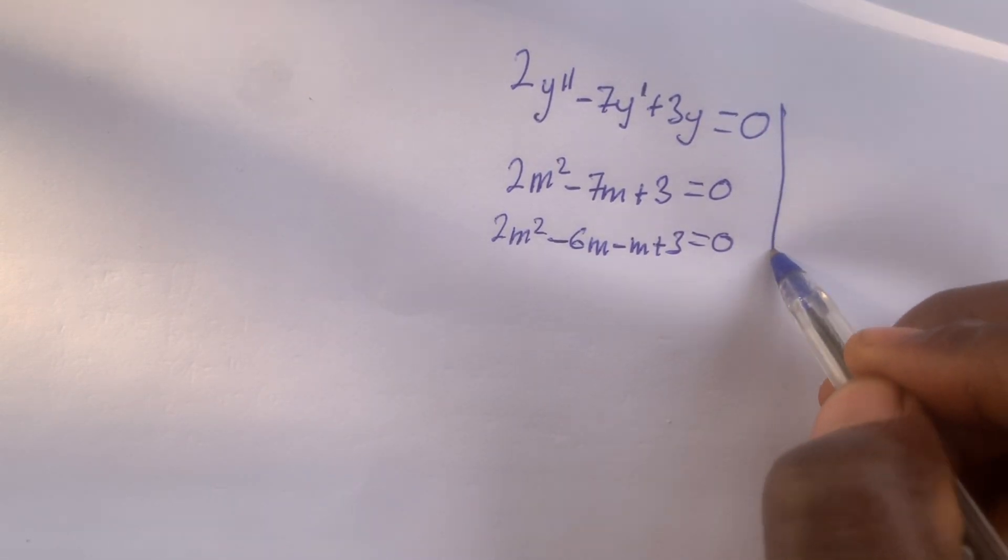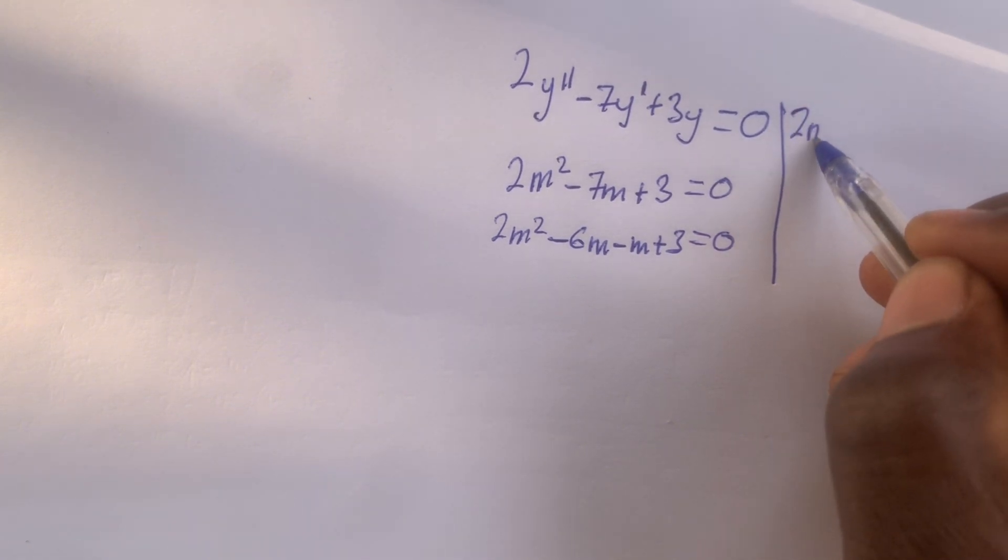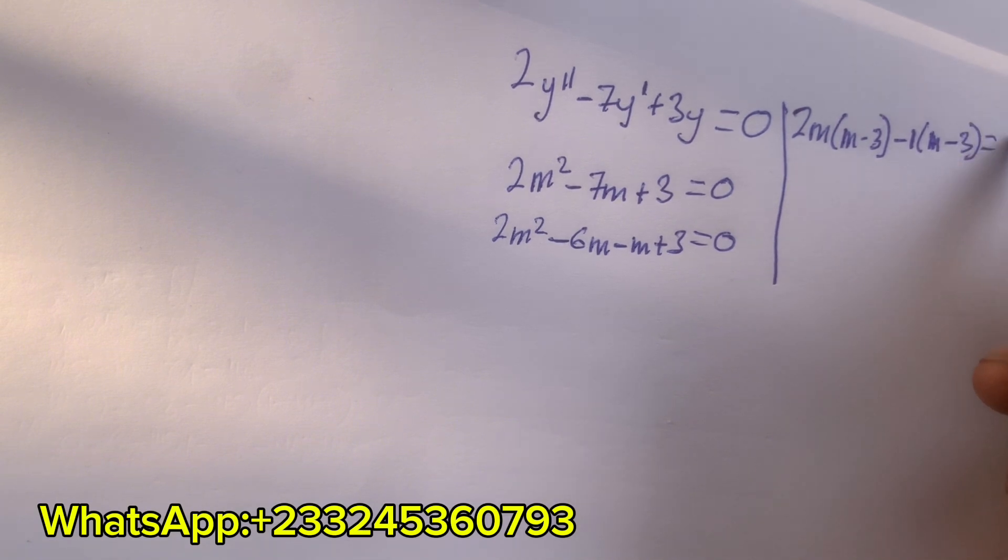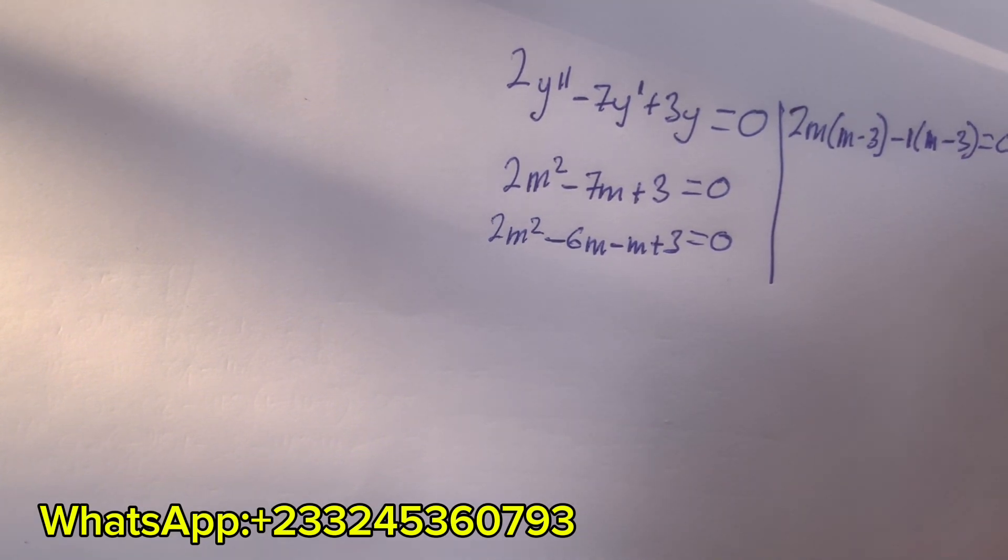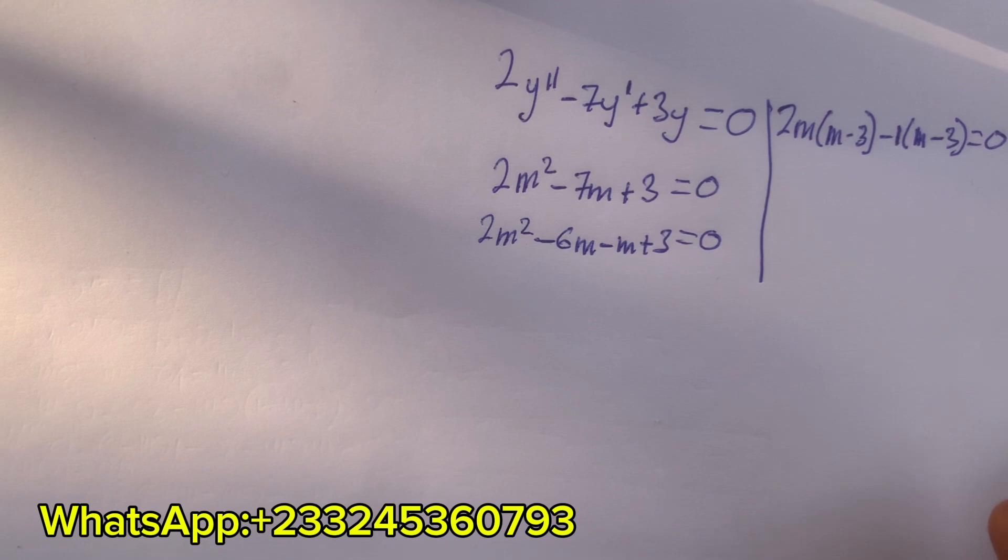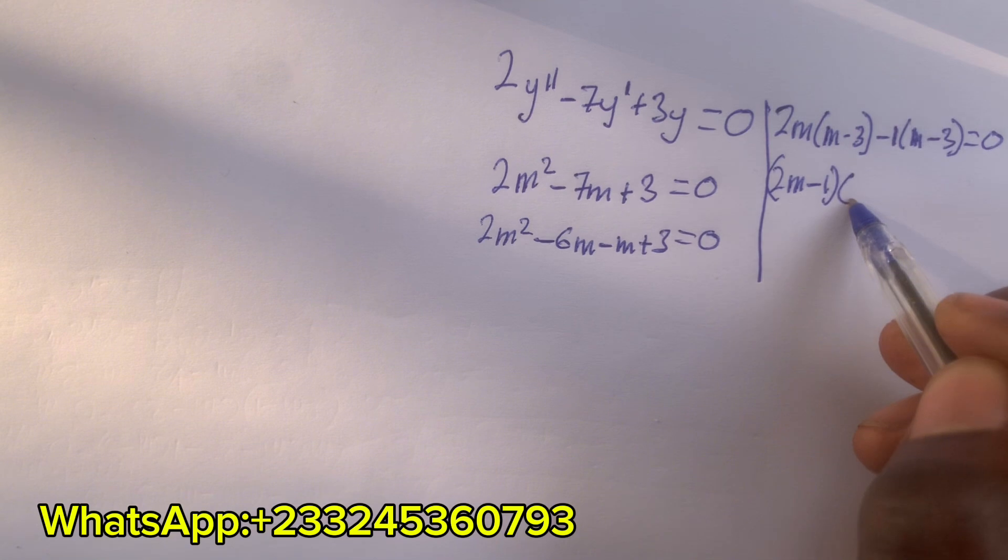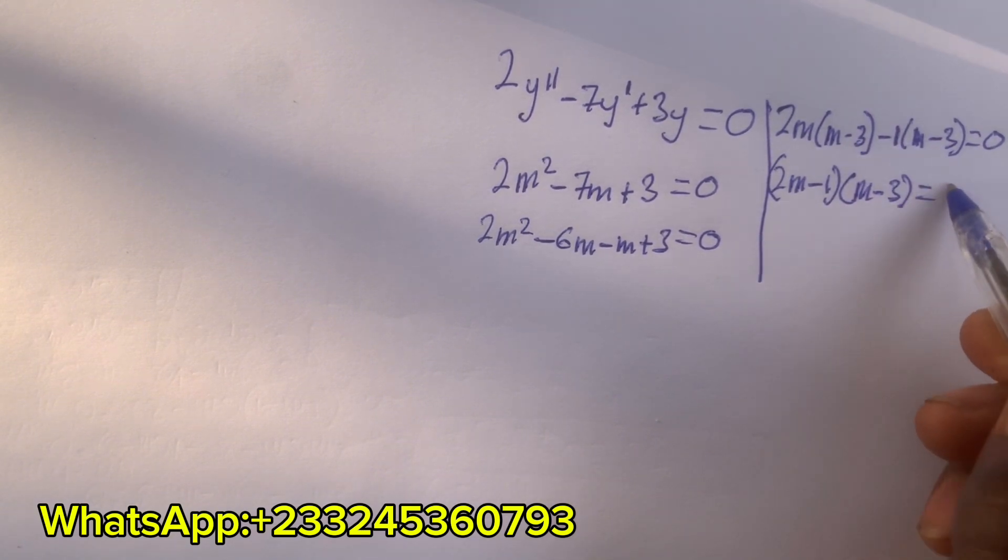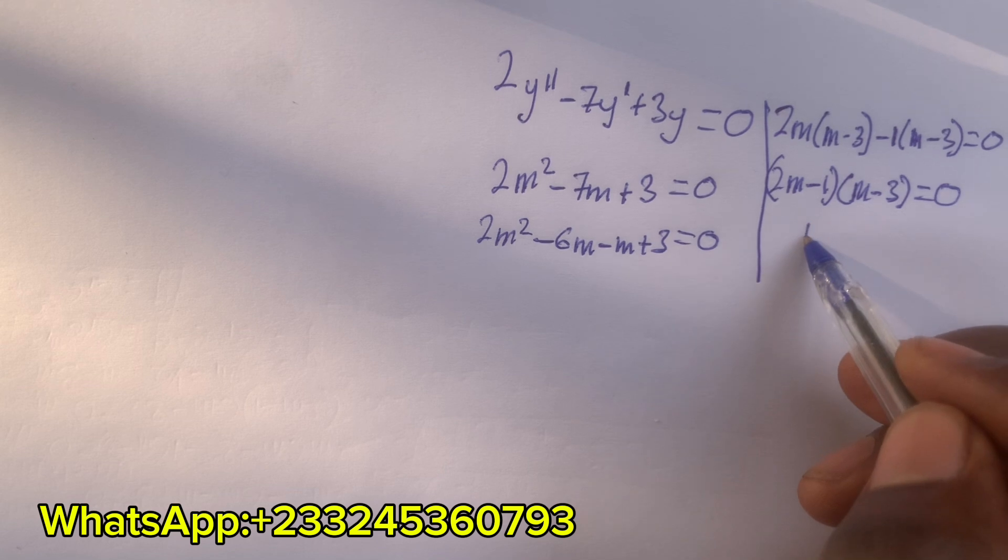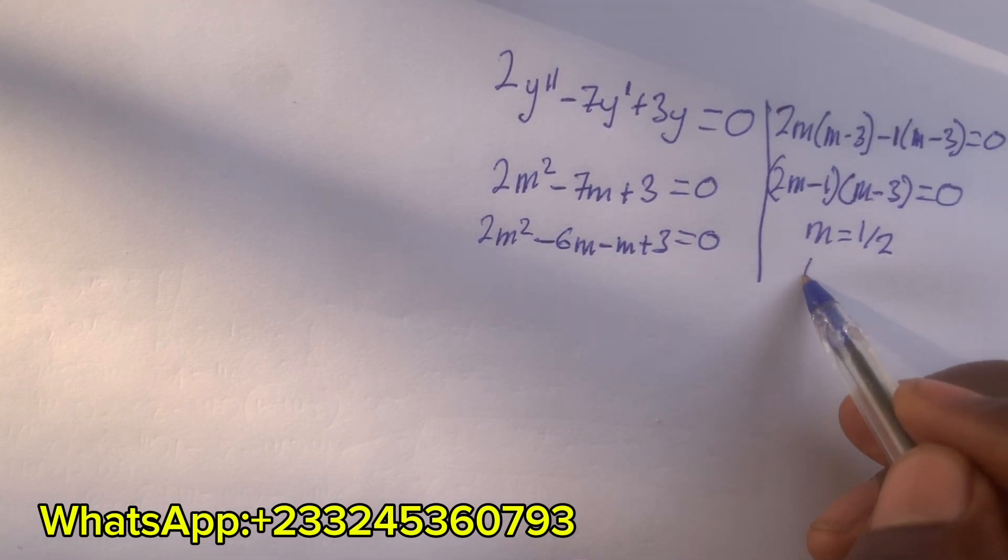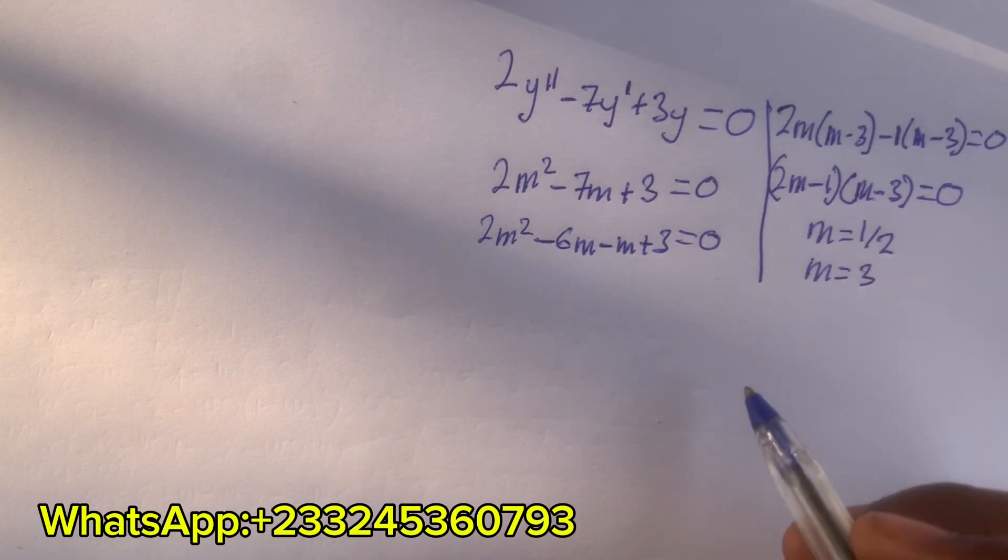This is going to give us 2m(m - 3) - 1(m - 3) = 0, so we have (2m - 1)(m - 3) = 0. If we equal 2m - 1 to 0, we get m = 1/2. And if we equal m - 3 to 0, we get m = 3 in a very simple way.